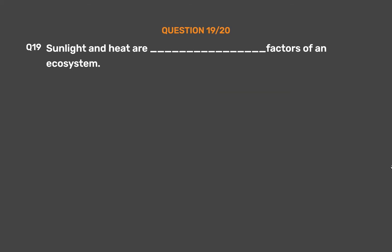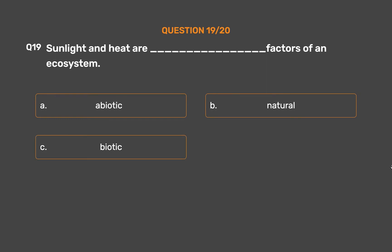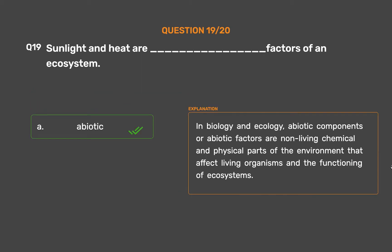Question 19. Sunlight and heat are blank factors of an ecosystem. Option A: Abiotic. Option B: Natural. Option C: Biotic. Option D: Inorganic. The correct answer is Option A: Abiotic. In biology and ecology, abiotic components or abiotic factors are non-living chemical and physical parts of the environment that affect living organisms and the functioning of ecosystems.